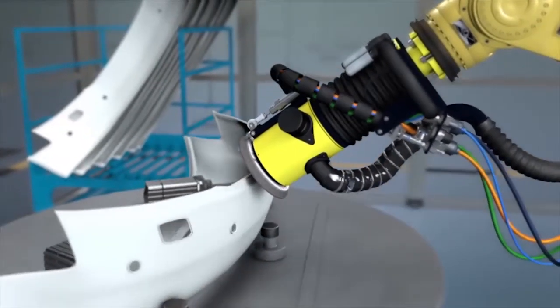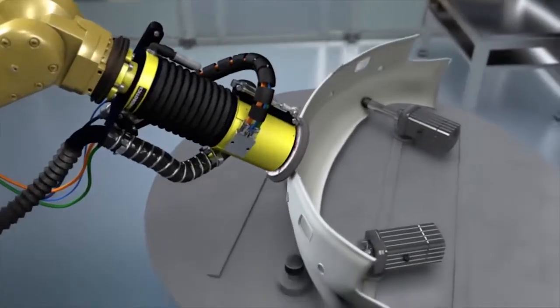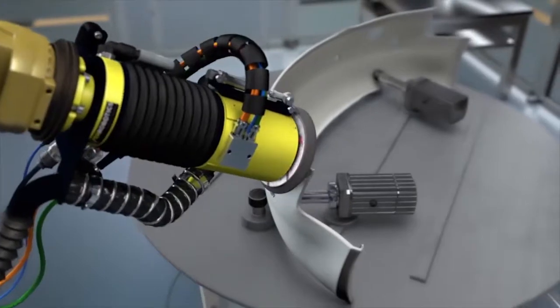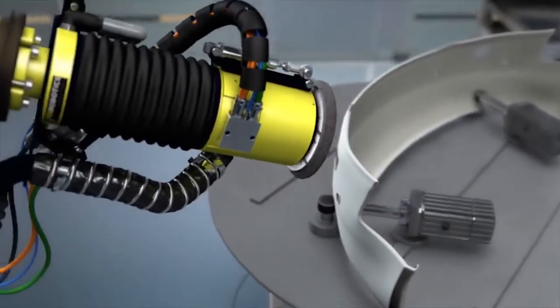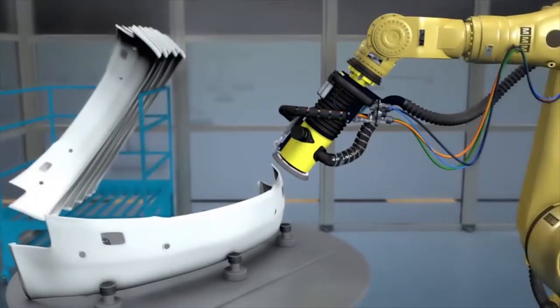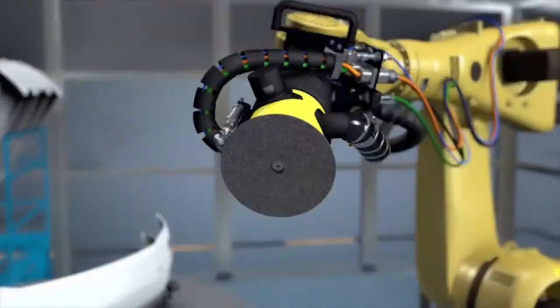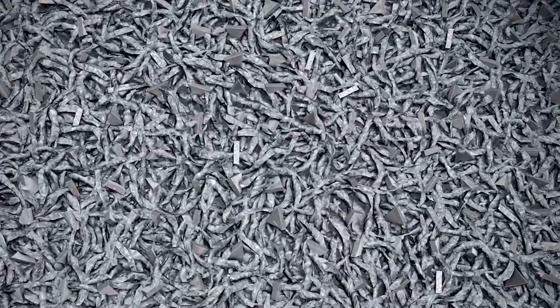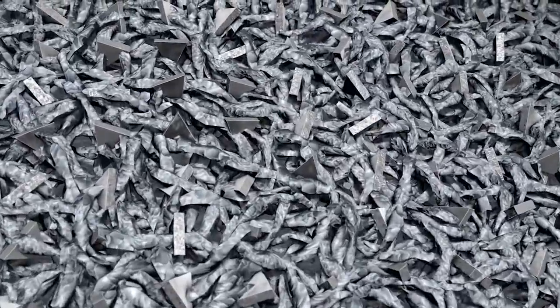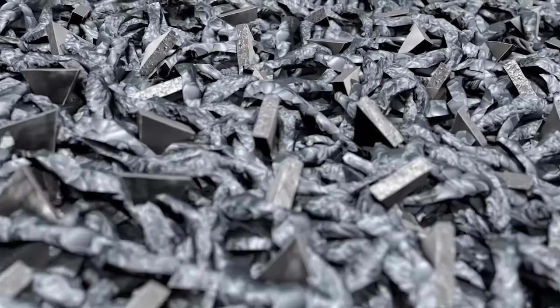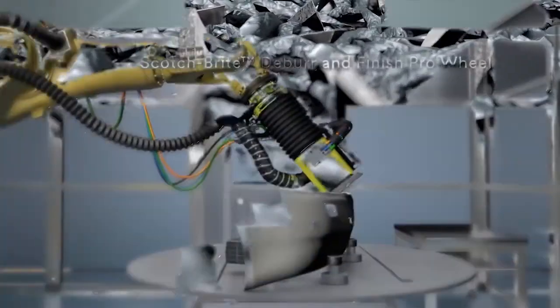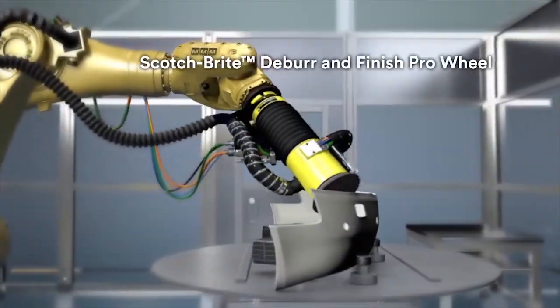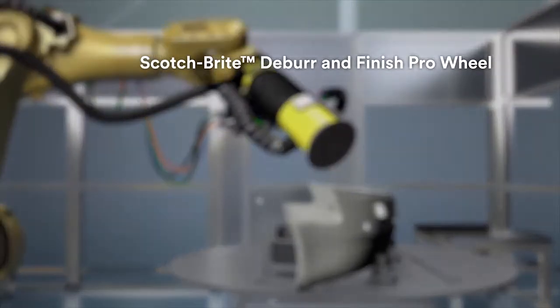The compressed non-woven fabric of which the wheel is made can be used dry, wet, with oil, and mild cleaning agents. It does not clog thanks to its open structure, it does not splinter, and it has high process reliability.